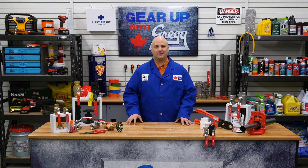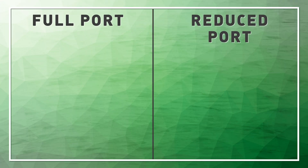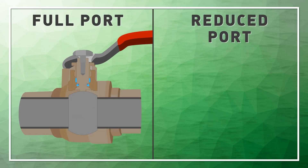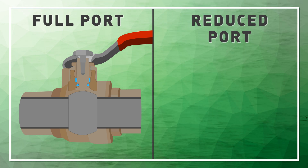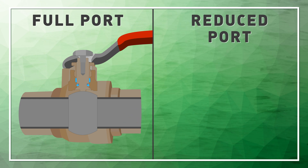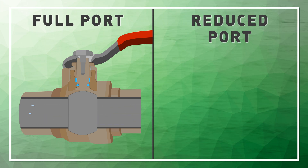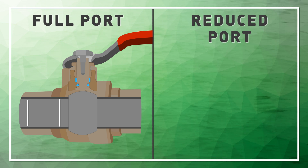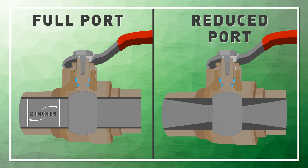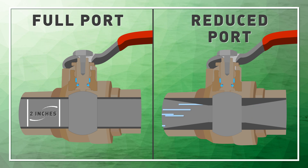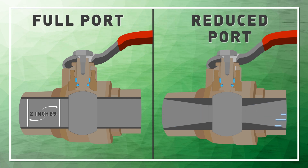When speaking about valves, you'll often hear the terms full port or reduced port. A full port valve means that when you connect a pipe or a hose to your valve, there will be no restriction of flow from the original diameter. So if the measurement of the IDs are equal, then it is a full port valve. A reduced port valve measures a smaller ID than its connection.